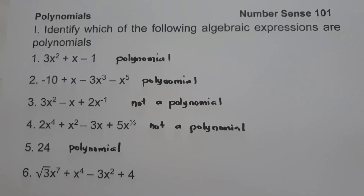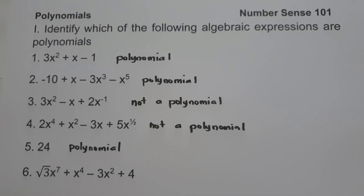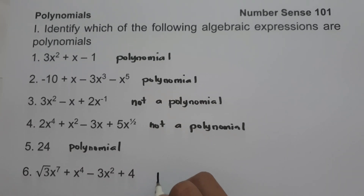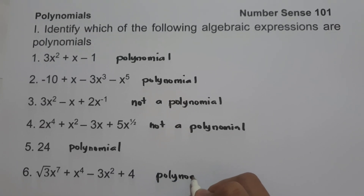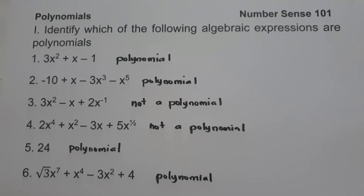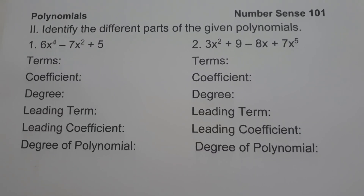Number 6: square root of 3 times x raised to 7 plus x raised to 4 minus 3x squared plus 4. Number 6 is an example of a polynomial because there is no negative exponent or fractional exponent. On the second set of examples, we are going to identify the different parts of the given polynomials.